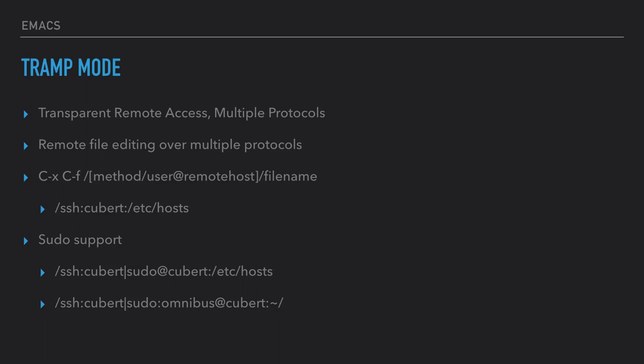Tramp mode is the Transparent Remote Access Multiple Protocols mode. What this allows you to do is remotely edit files over multiple protocols. I'm going to be using SSH, but you could be using FTP if needed. Tramp mode has been around in Emacs since, I believe, 2003. There were some other modes that predated it, but for my purposes I use it all the time with SSH.